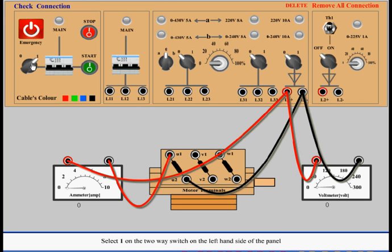Select one on the two-way switch on the left hand side of the panel. Switch on the MCB and click the start button. Switch on the second MCB.